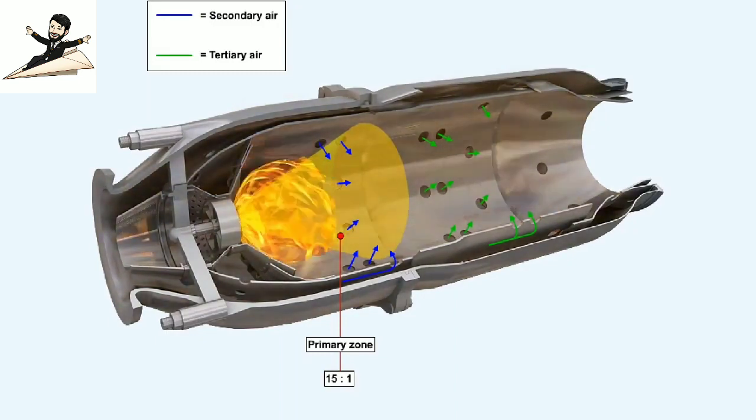The addition of secondary and tertiary air will dilute the mixture to the extent that the overall ratio may vary from 45 to 1 to as weak as 130 to 1.